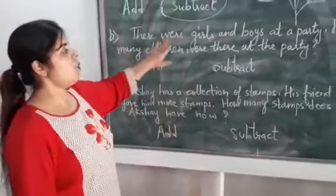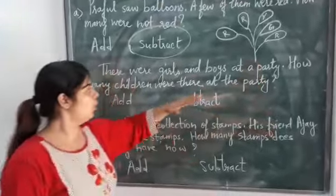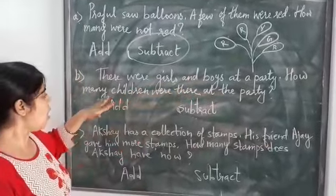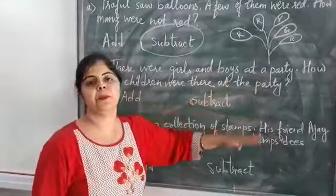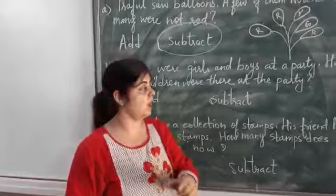Next, there were girls and boys at a party. What are girls and boys? Means total, how many children are there in the party? All together we have to find out how many boys and girls are there.